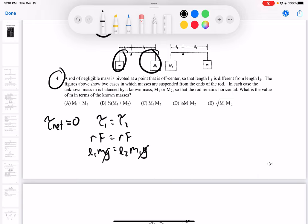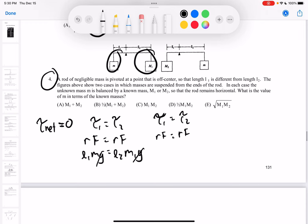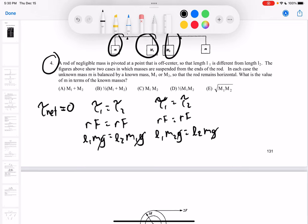And then the same thing over here, so we have torque 1 equals torque 2, so I have rf equals rf. And so then I'll have left side will be L1 m2 g equals L2 m g. G's cancel out now.